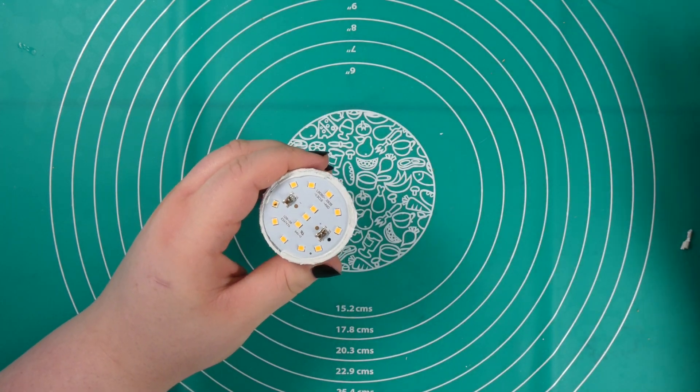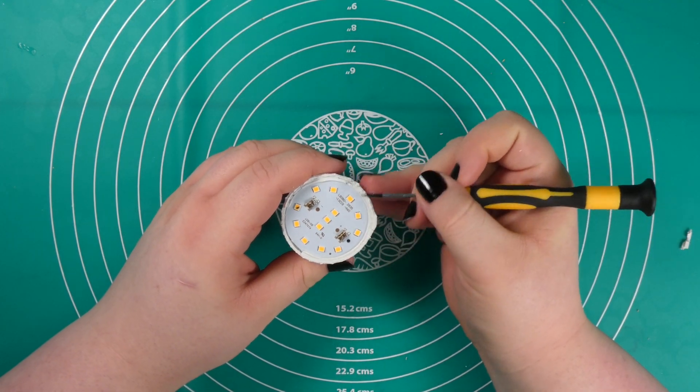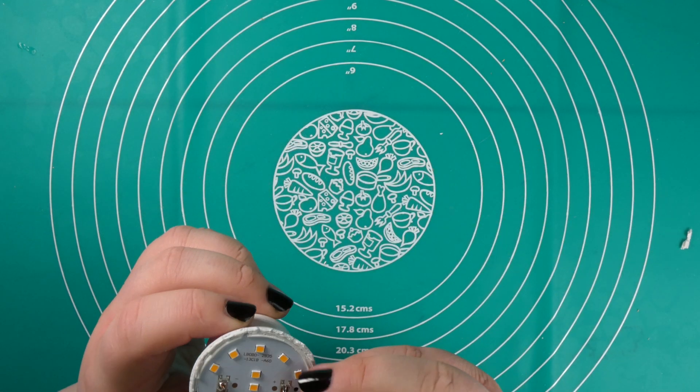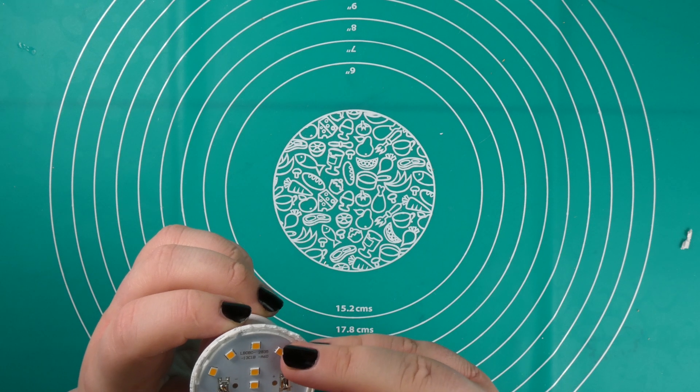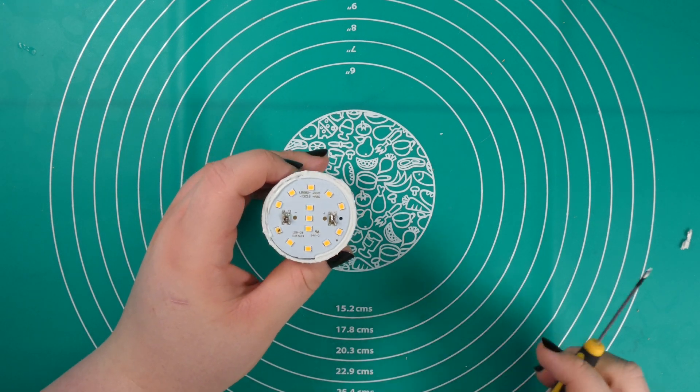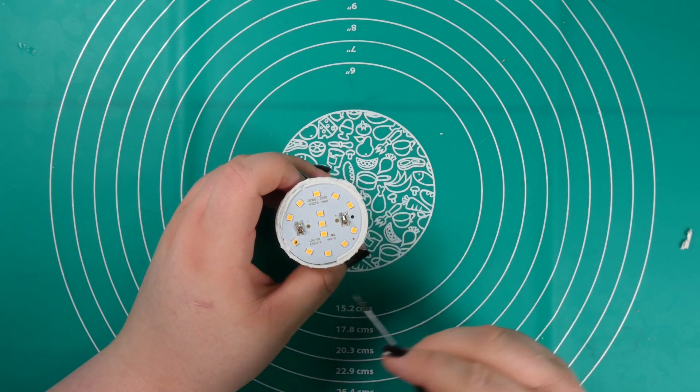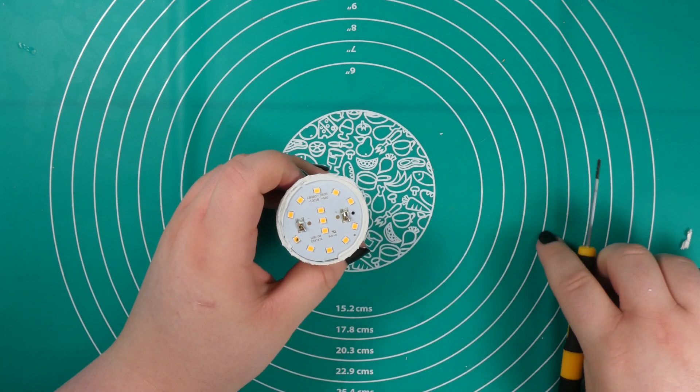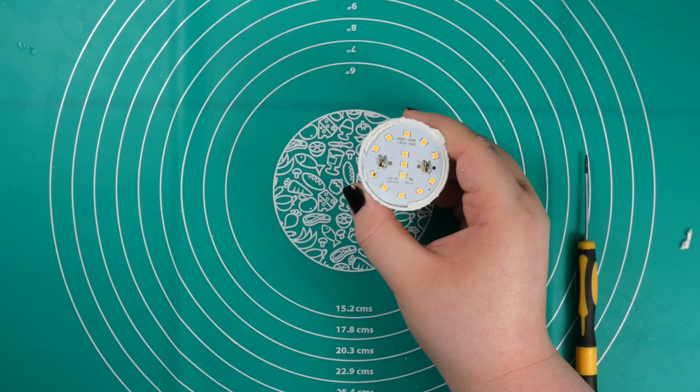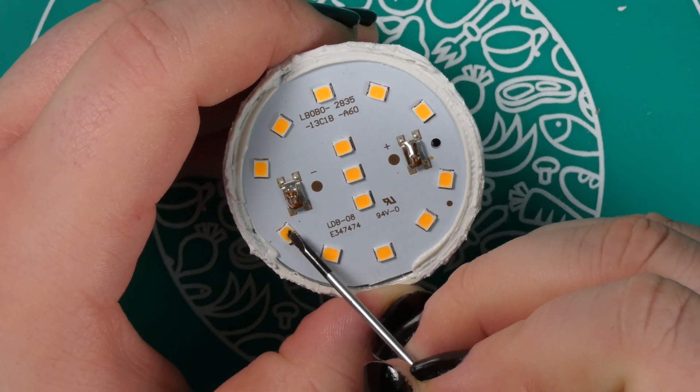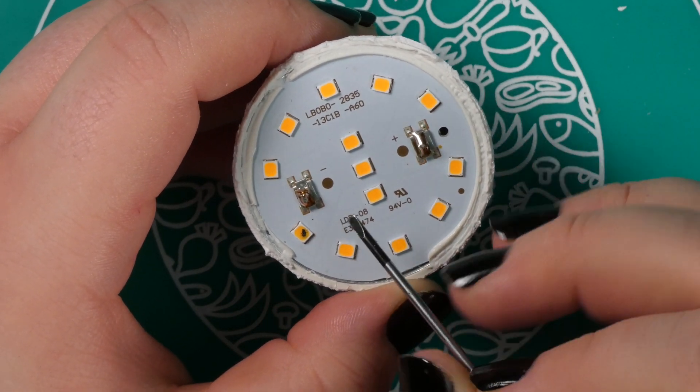However, now we are inside and what we can see here are multiple small LEDs. These are 13 LEDs and one has a black spot on top. Oh that's interesting, I think this is the culprit. This one seems to be damaged.